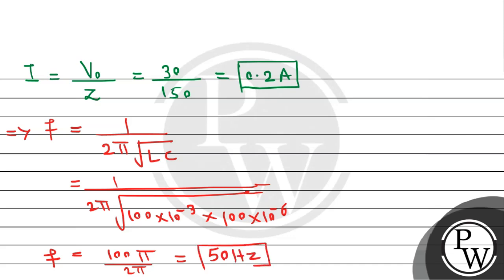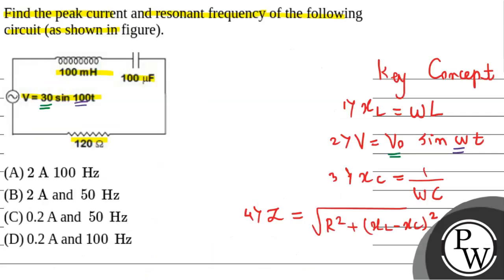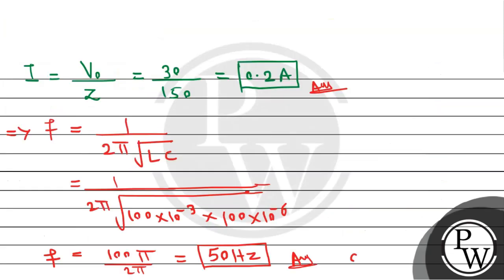These are the required answers to this question, which we calculated by using the formula of impedance, the formula of inductive reactance, capacitive reactance, and instantaneous value of voltage. According to the given options, option C will become correct. This is the required solution. I hope you understood it well. Best of luck. Thank you.